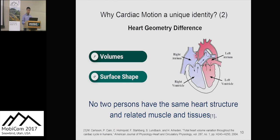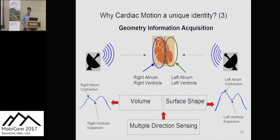From a biological point of view, no two people have the same heart structure, muscles, and tissues. The heart has a right atrium, right ventricle, left atrium, and left ventricle — all geometrically different in surface shape and volume. To capture this heart geometric information, multiple radars are deployed around the subject to sense from different directions, capturing ventricle and atrium vibrations from different angles.